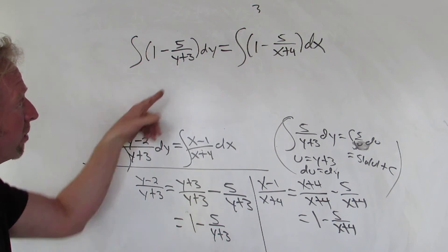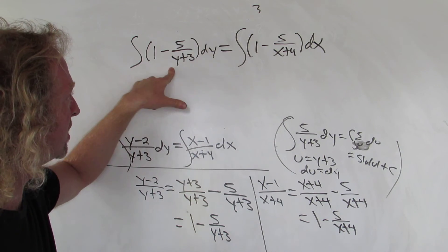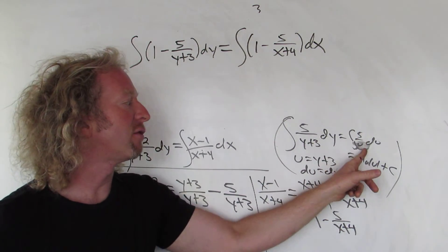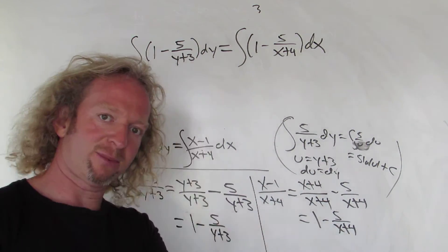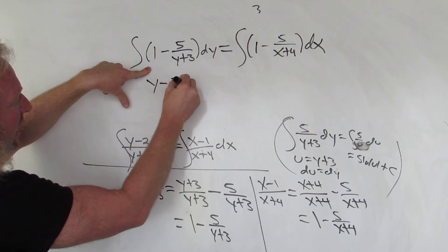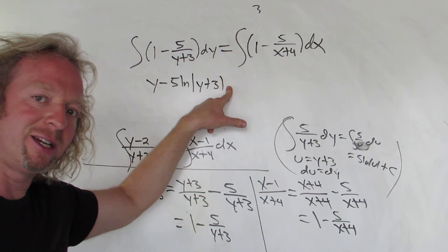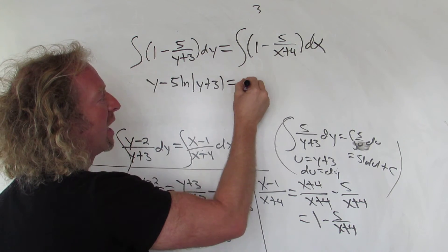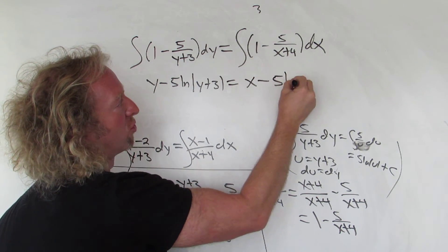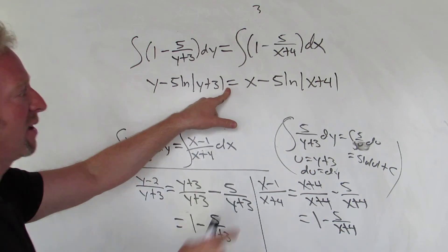So these integrals here you can do them in your head if you're watching this video. That's your u so your du is just dy, and so you just get 5/u and that gives you a natural log with an absolute value. So this is going to become y - 5ln|y+3|, and you're supposed to add a c here but I'm not going to and I'll explain why. This is x - 5ln|x+4|.